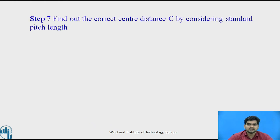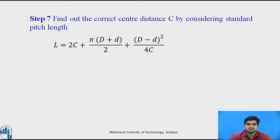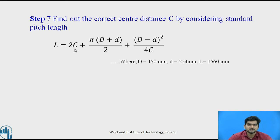We have to find the corrected center distance c by considering the standard pitch length. Since we changed the pitch length to the standard value, the center distance will also change. Substituting the standard length of 1560 mm back into the equation, we get the corrected center distance c equal to 484.85 mm.